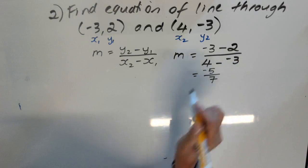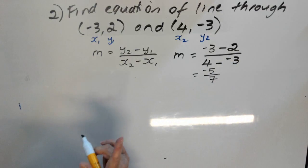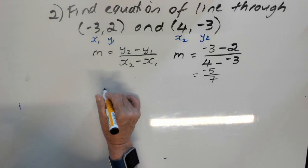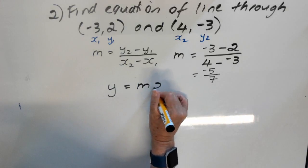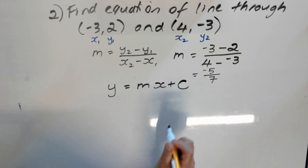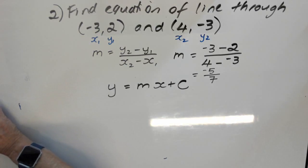So, our gradient is negative 5 over 7. We've found the gradient. We want to be able to write an equation like this, y equals mx plus c. We've found our m, now we need to find our c.